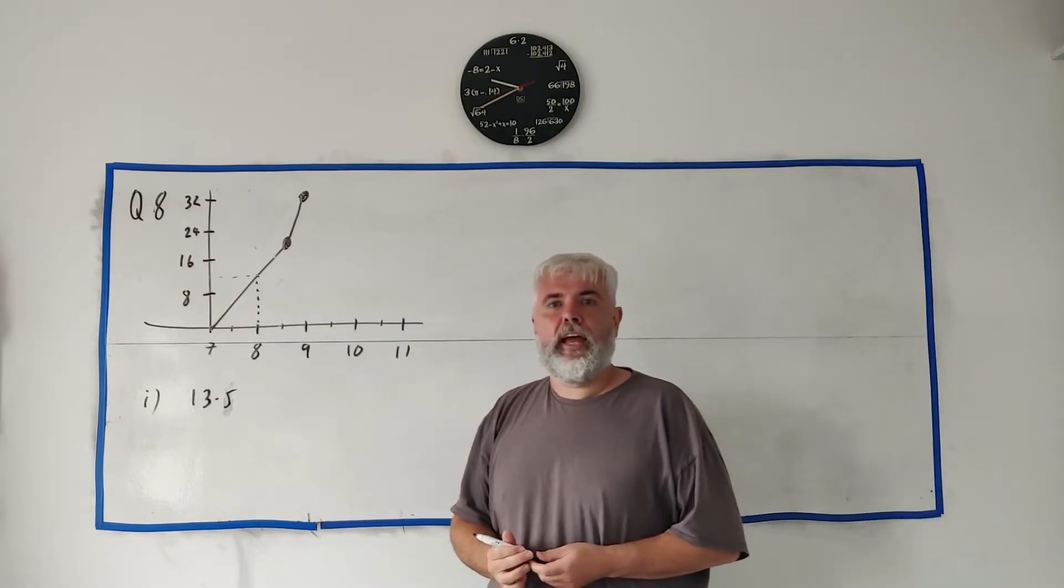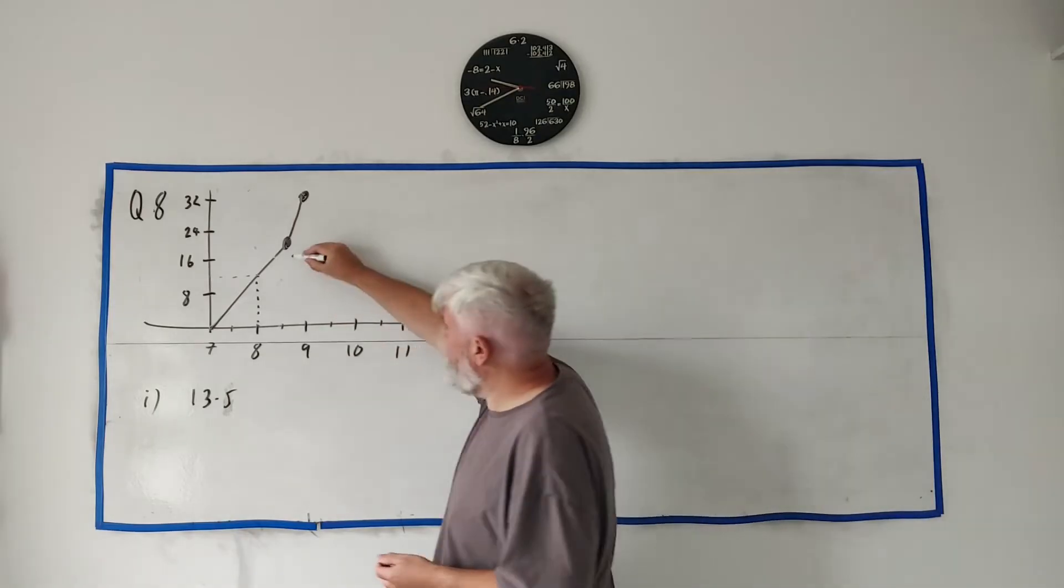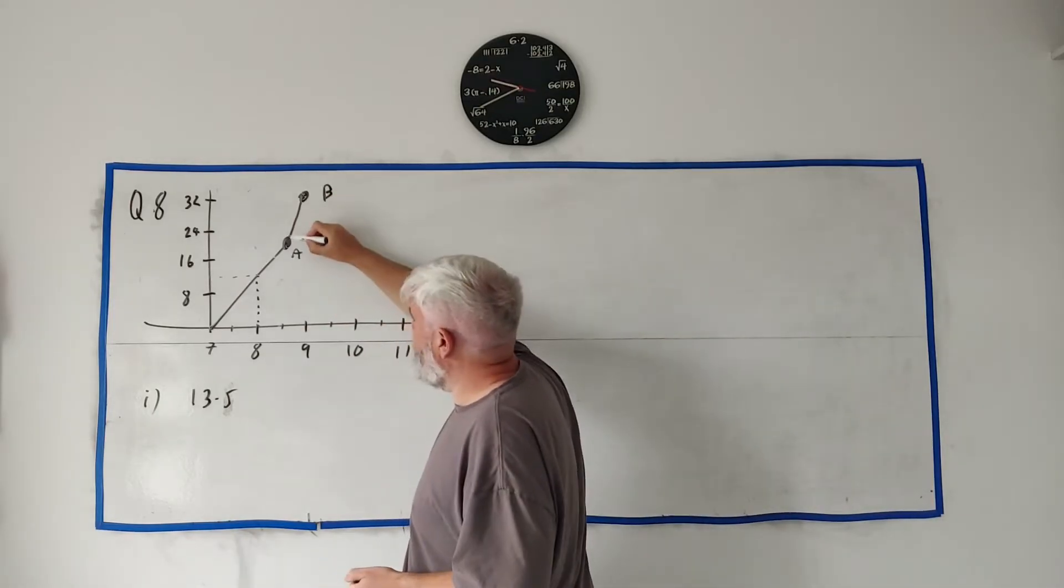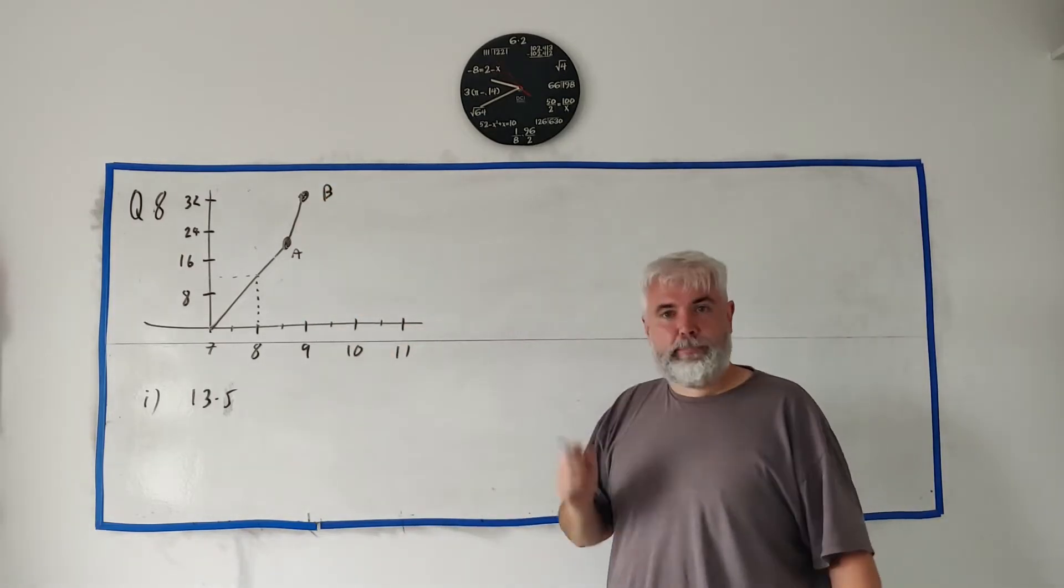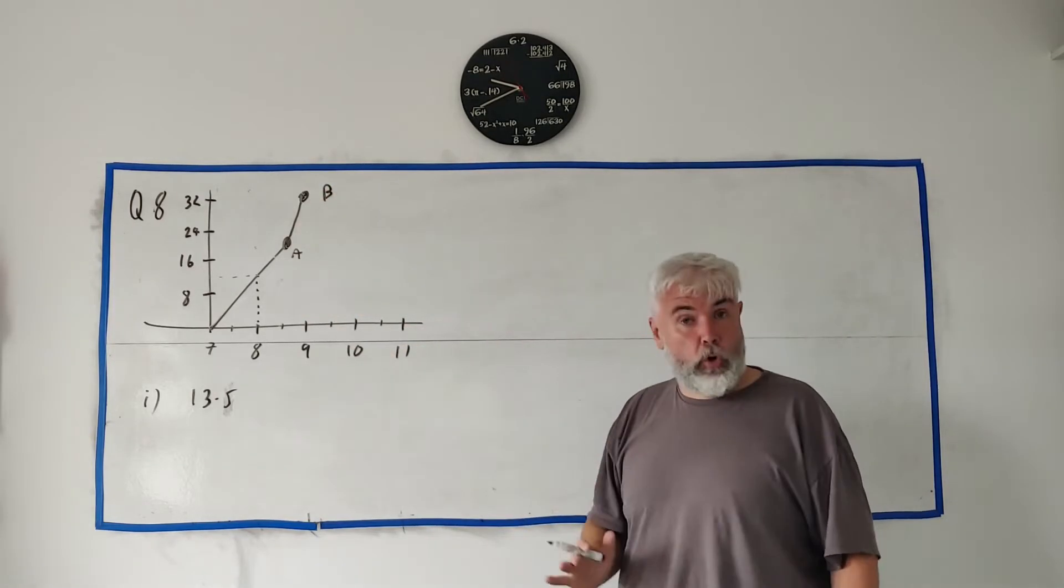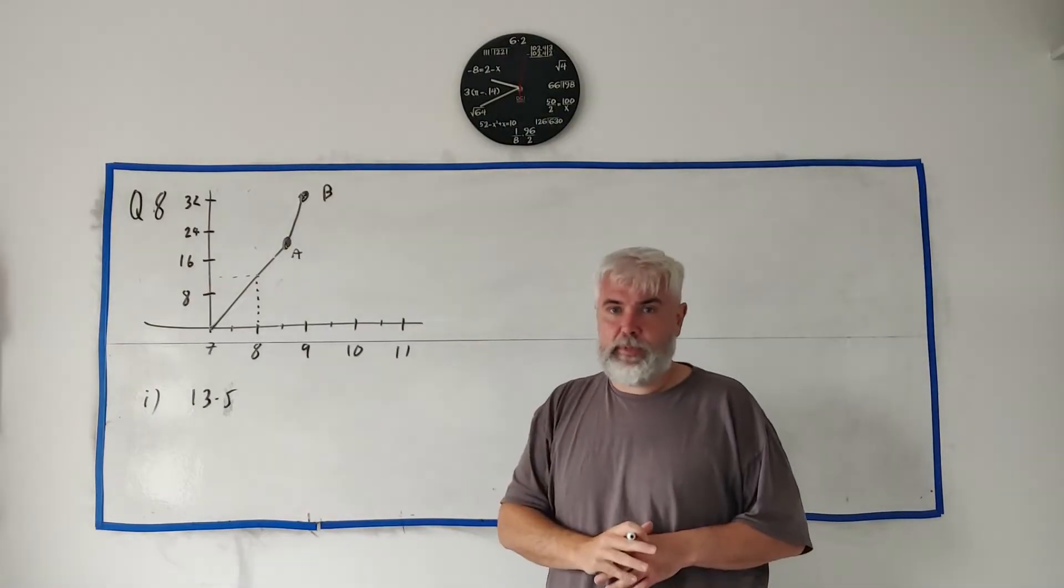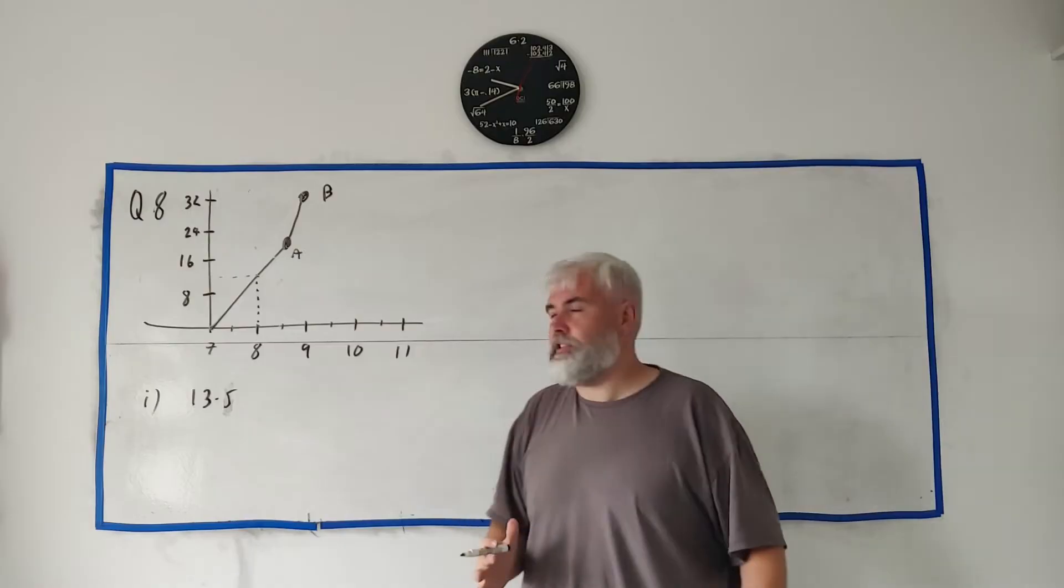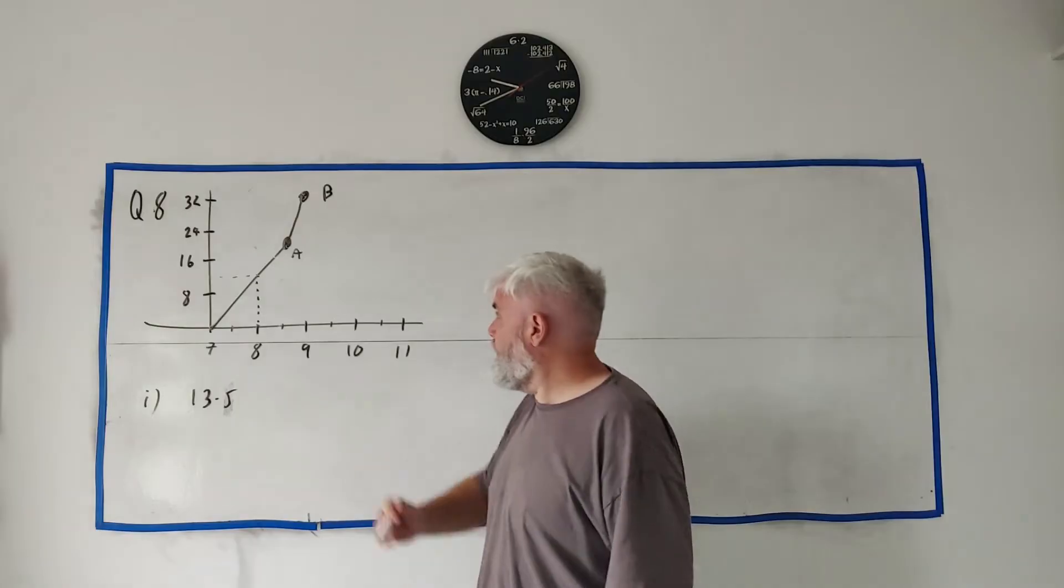For part 2, they ask us to find his speed in kilometers per hour while he's traveling from A to B. Remember, this is A and this is B. While going from there to there, what's the speed? Speed is the same as slope. I already touched on that a bit: the slope is the same as the speed, which is the same as differentiation. So you need to find out what the slope of this line is.